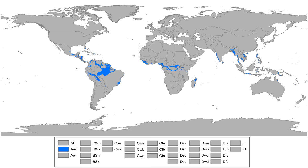Tropical monsoon climates are most commonly found in South and Central America. However, there are sections of South Asia, Southeast Asia, Africa — particularly West and Central Africa — the Caribbean, and North America that also feature this climate.